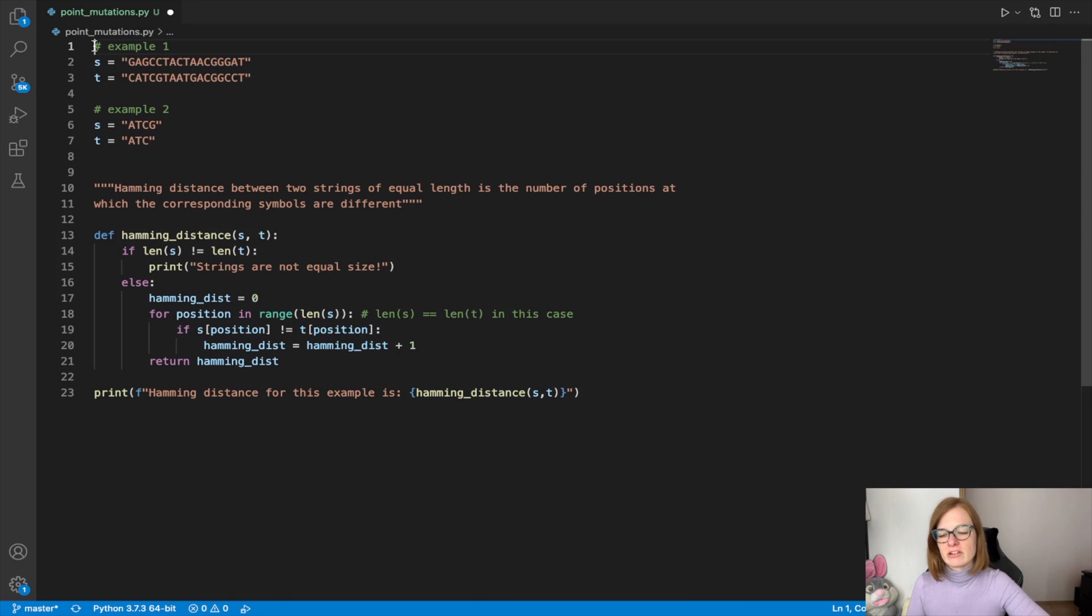So what exactly is our task? We are given two strings which represent the DNA sequence and we need to calculate the number of point mutations. And we already said we are going to calculate that by using the concept called Hamming distance, meaning that we are going to count the number of positions where these two strings are not equal.